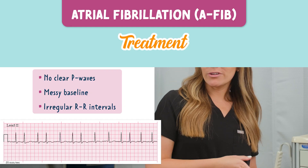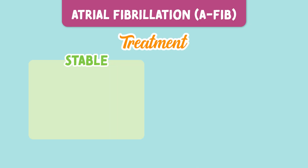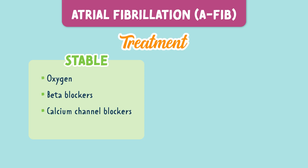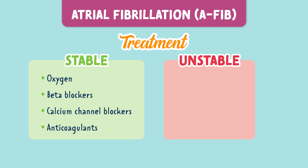Now for treatment. If the patient is stable, we focus on rate control — think oxygen, beta blockers, calcium channel blockers, and we usually start anticoagulants to prevent clots. But if the patient is unstable with low blood pressure or symptoms, we administer oxygen if needed and do a synchronized cardioversion.